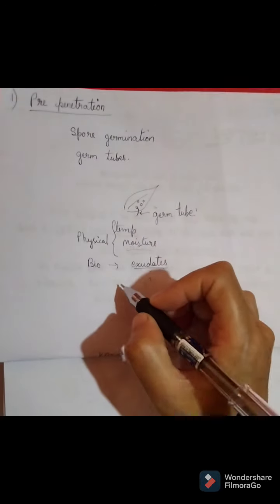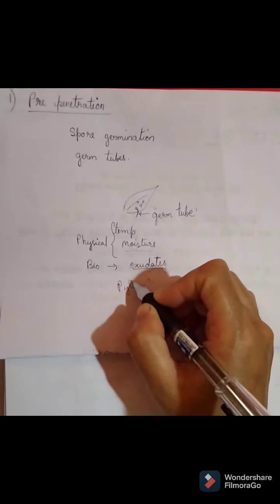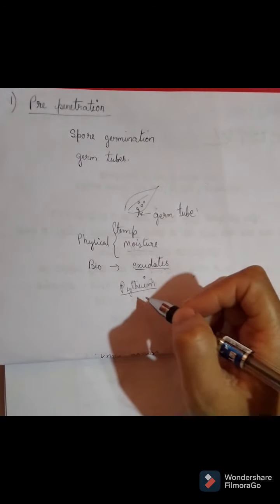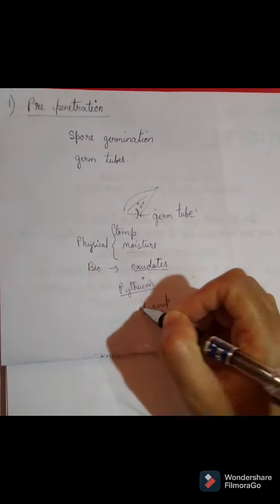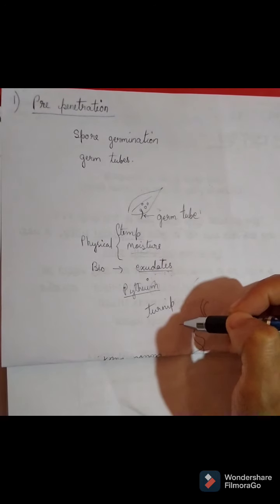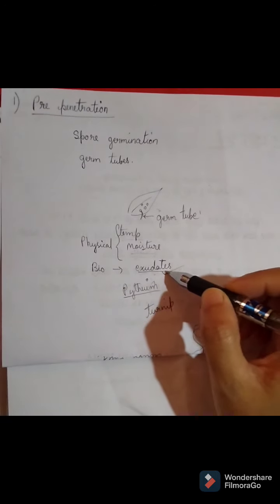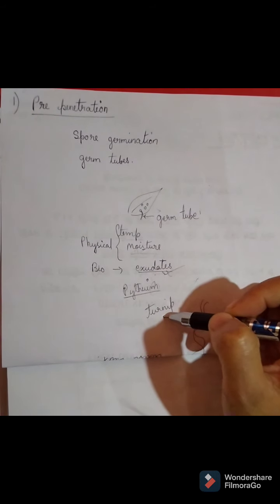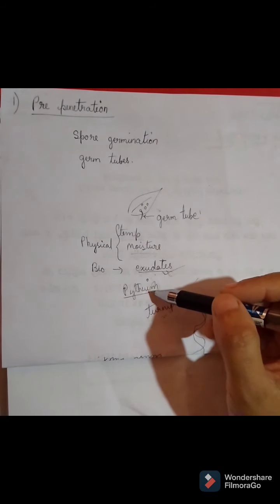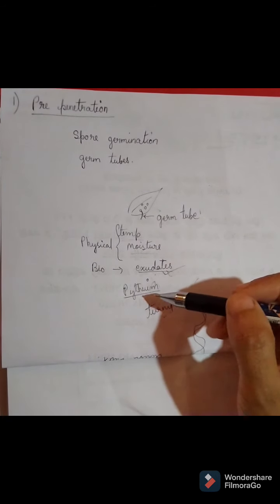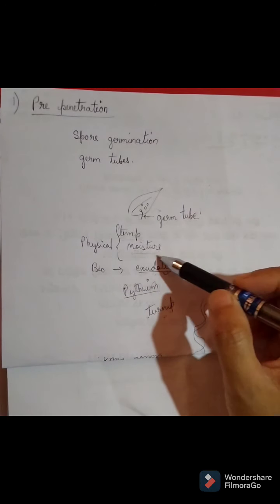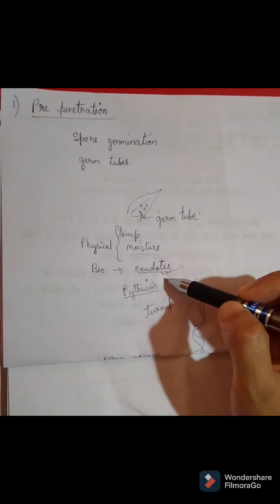For example, take the fungi Pythium, which infects the turnip root. When the spore comes in contact with the plant, the exudates produced by the roots of the turnip stimulate the spore germination of Pythium. However, other plants like orange peel, onion, and potato reduce spore germination.